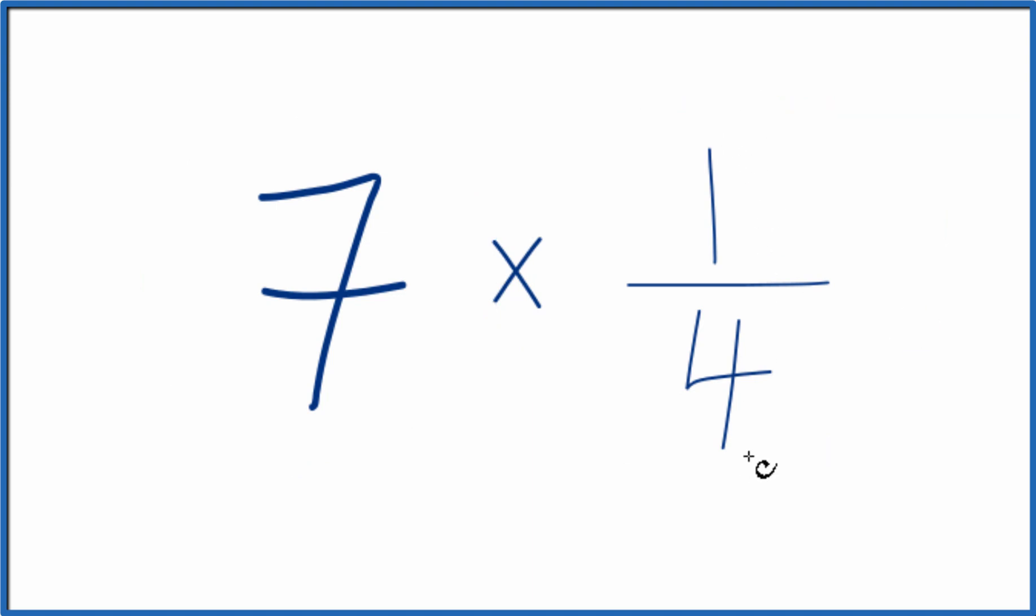So you could just add 1 fourth together 7 times. That would give you 7 times 1 fourth.